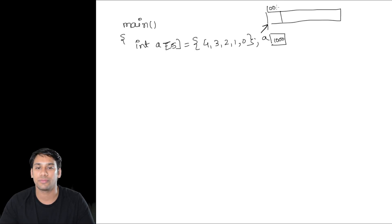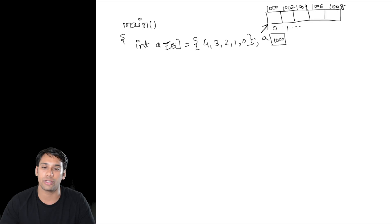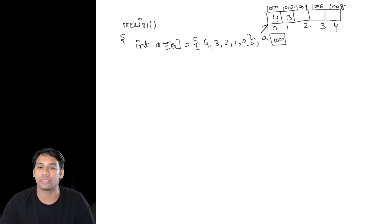So this is location 1000, this will be 1002, this will be 1004, this will be 1006, and this will be 1008. So these are the index locations 0, 1, 2, 3, 4, and the values stored are 4, 3, 2, 1, and 0.